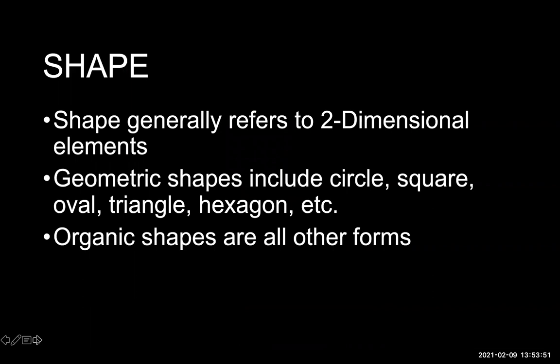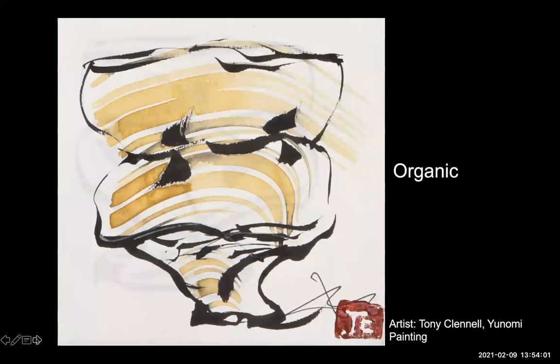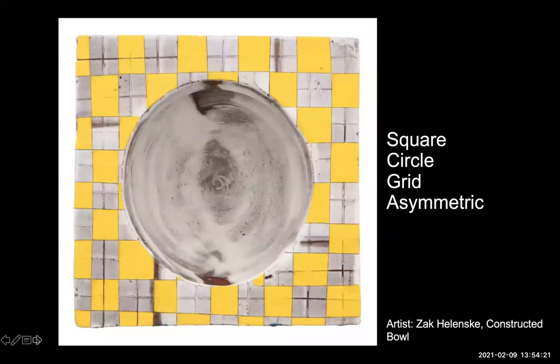Shape generally refers to two-dimensional elements. Geometric shapes include circles, squares, ovals, triangles, and hexagons. Organic shapes are all other forms that are not geometric. The majority of shapes depicted in this painting are organic. Even the shapes that appear more geometric are not symmetrical and merely reference rectangles and triangles. The yellow curved lines are meant to suggest a three-dimensional form without much use of shading — a traditional way of representing a 3D form with 2D media. While this appears to be a flat composition, it is actually a bowl. It is easy to see shapes we can readily reference: squares, a circle, and grids. Upon a quick glance, one might think this is symmetric, but after viewing more closely, the design is not mirrored in any direction.